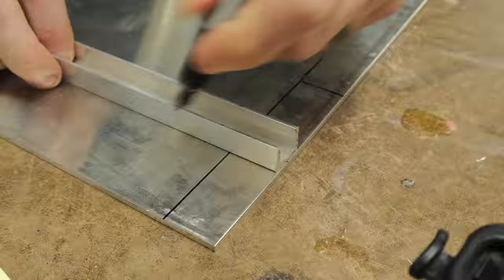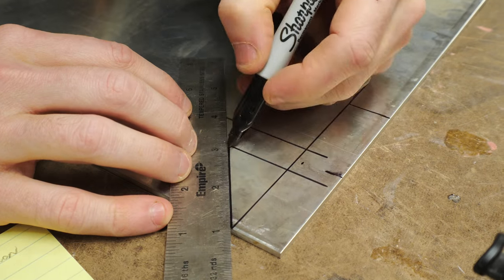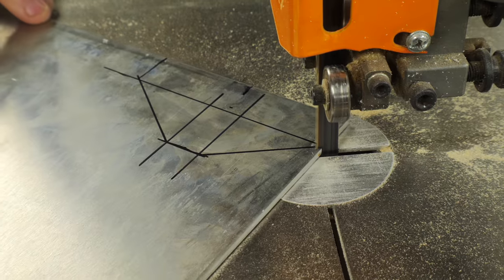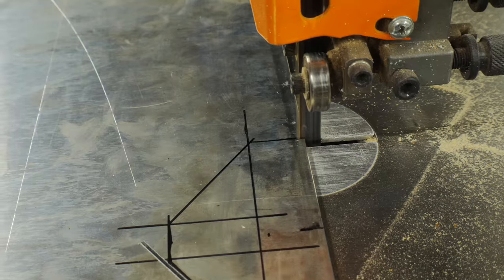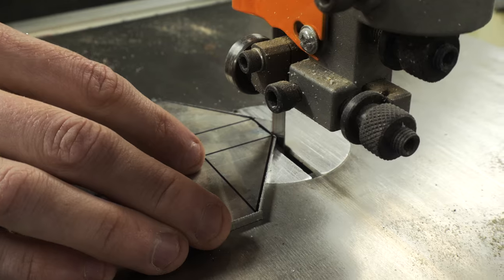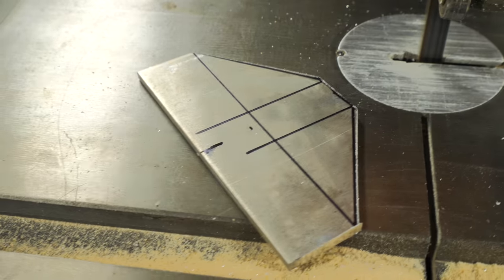I drew out a simple gusset on a thick piece of aluminum and cut it out on the bandsaw. This piece will actually serve two purposes. It makes it easier to balance while you're holding it, but also acts as a foot so you can set the grip down on a table.